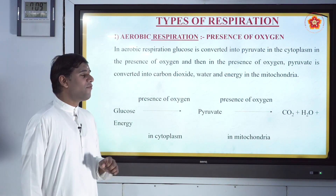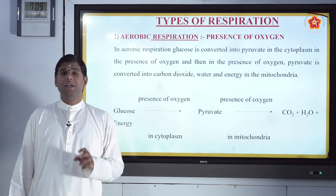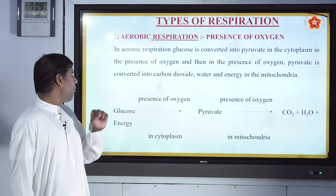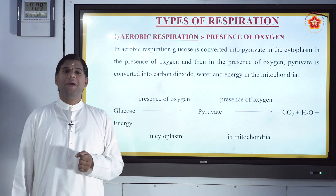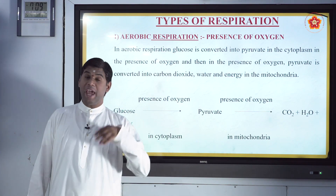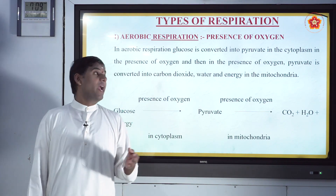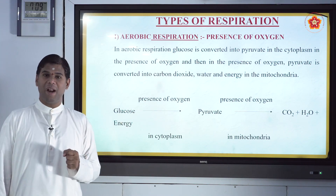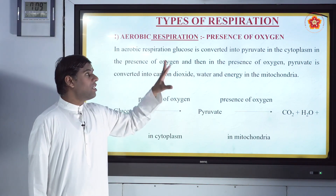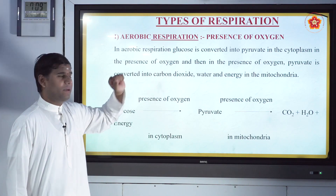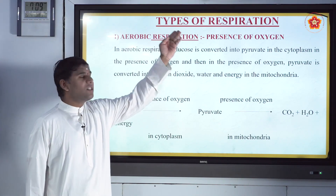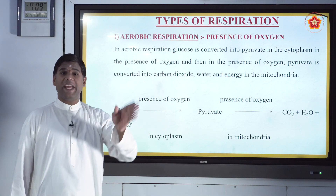There are two types of respiration: aerobic and anaerobic. Aerobic means in the presence of air, i.e., oxygen. In aerobic respiration, the process takes place in the presence of oxygen. This happens in the majority of organisms, animals, and human beings.